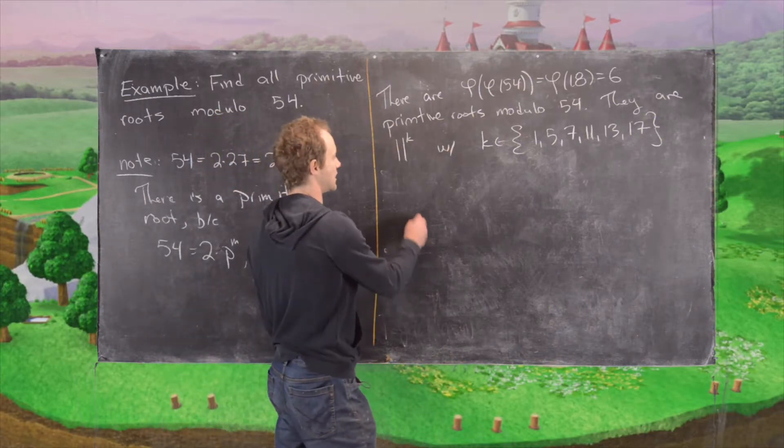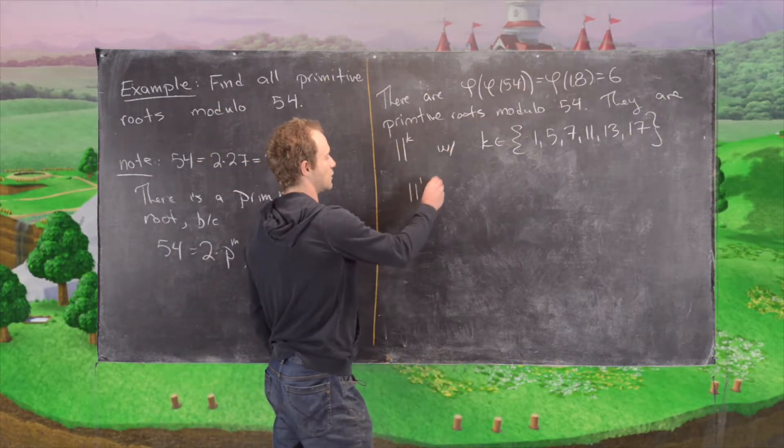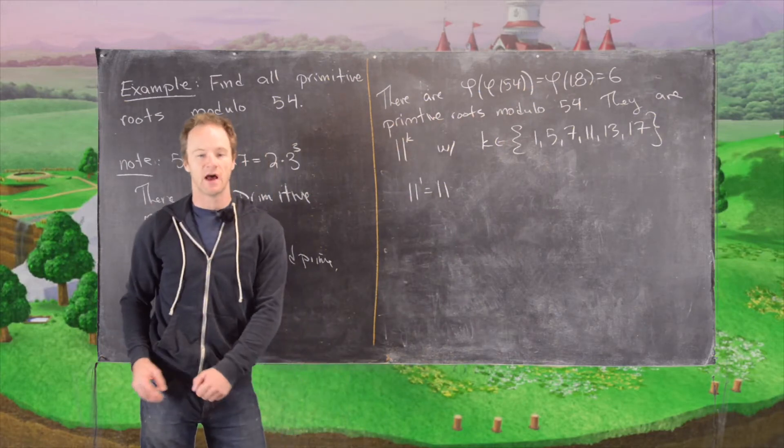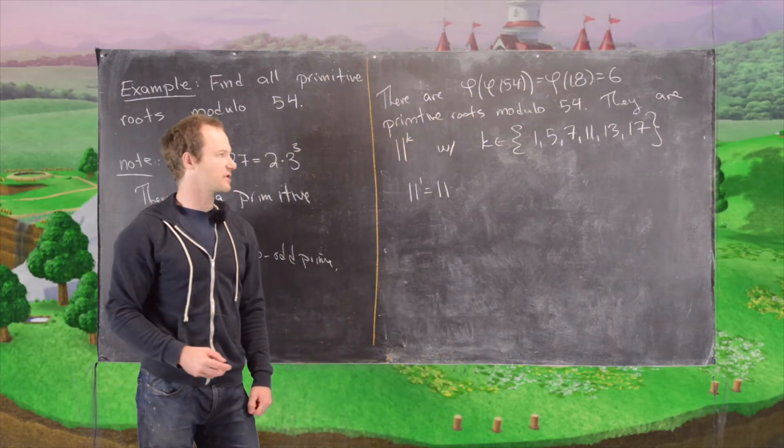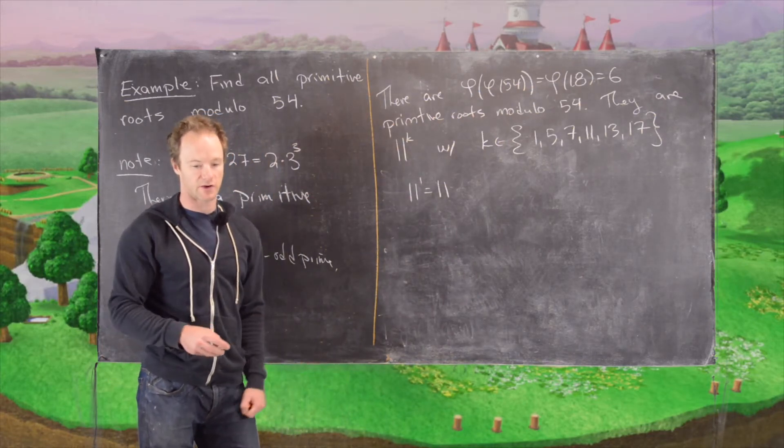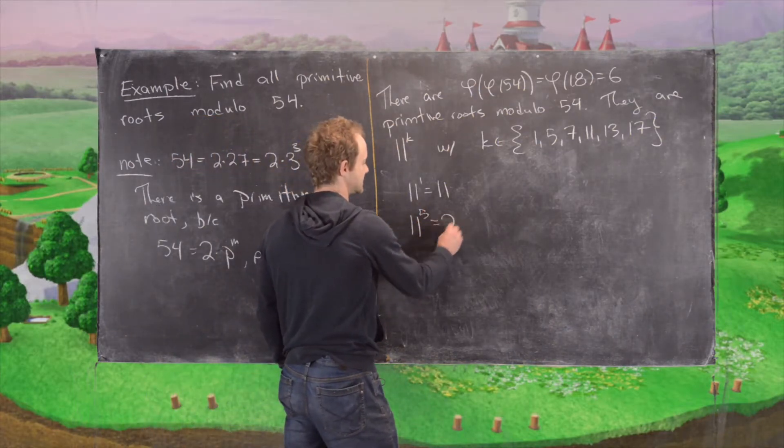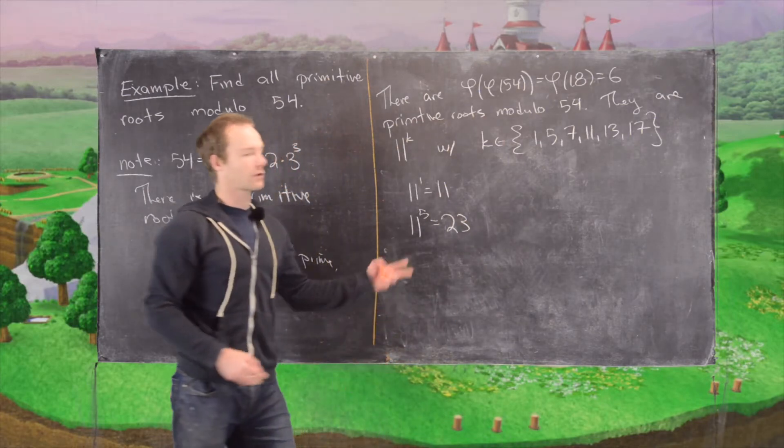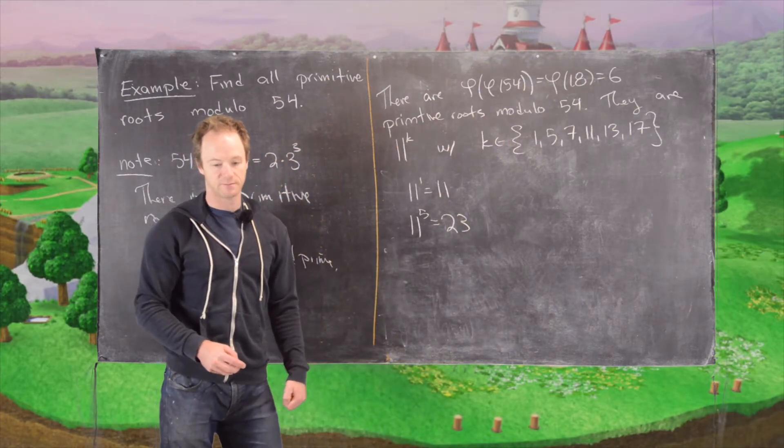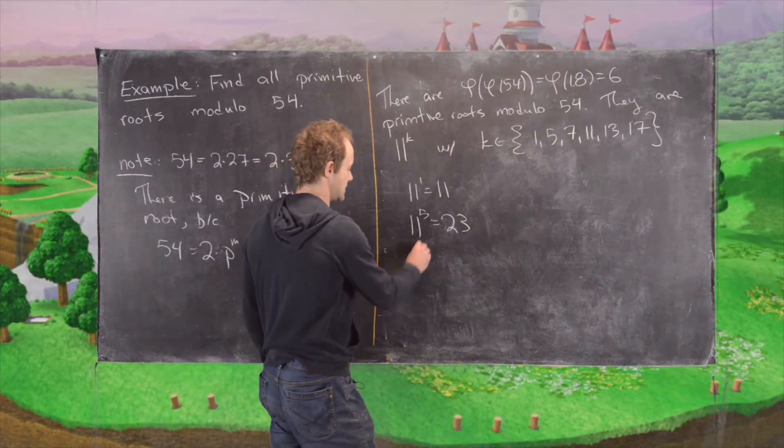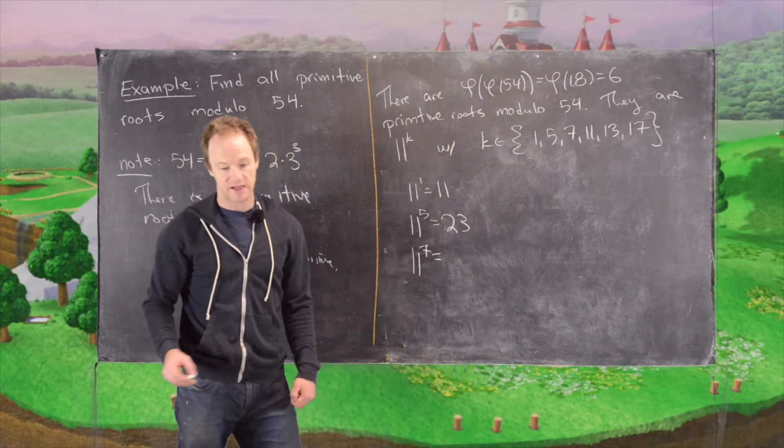And so now we can calculate all of these numbers. So 11 to the 1 is obviously 11. Now I'm going to leave off the calculation, but you can look at previous videos for how to quickly calculate this arithmetic modulo 54. And then 11 to the 5 is 23. And here we're working mod 54 the whole time. 11 to the 7 is 29.